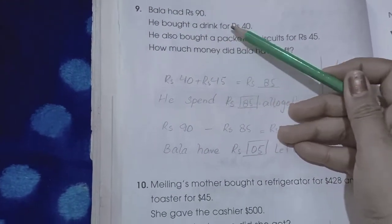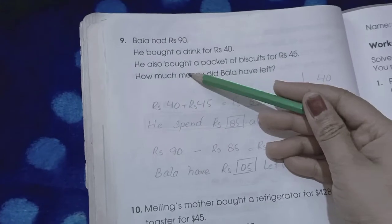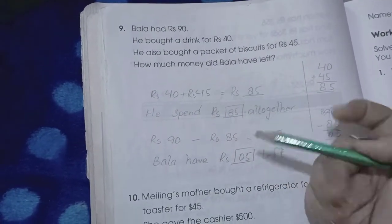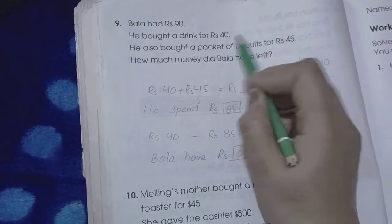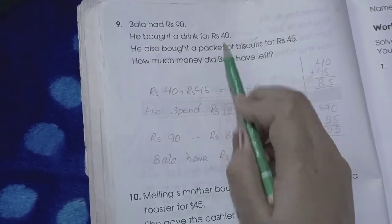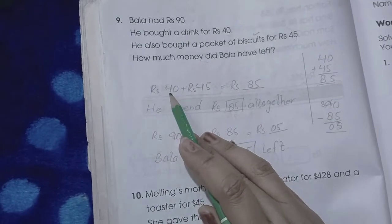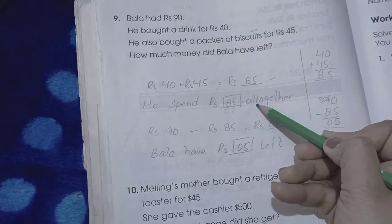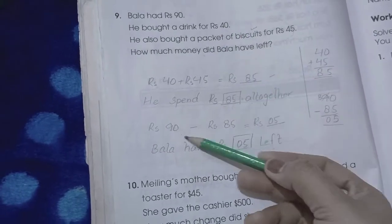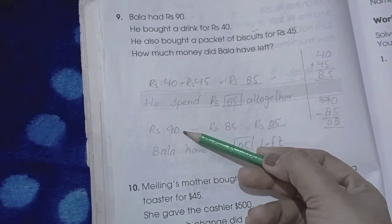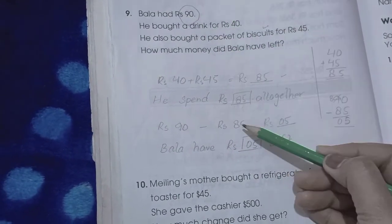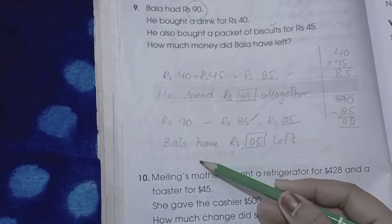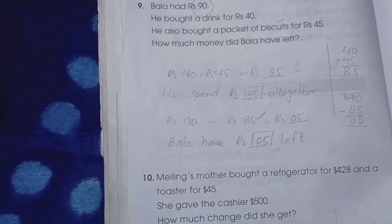Number nine: Bala had 90 rupees. He bought a drink for 40 rupees and a packet of biscuits for 45 rupees. How much did he have left? First we add both numbers: 40 plus 45 is 85. He spent 85 rupees. Now how much money is left? The total money is 90, from which he spent 85. 90 minus 85 is 5. Bala has 5 rupees left.